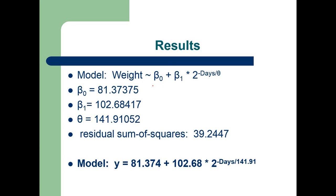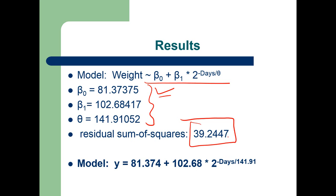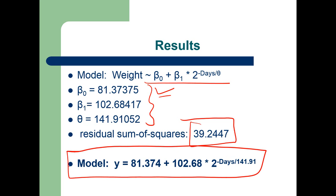Here is the final model from the given data. We have three estimated parameters: beta 0 is 81.37, beta 1 is 102.68, and theta is 141.9. The residual sum of squares estimate is 39.2547. The final model uses these values — intercept 81.37, slope coefficient 102.68, and exponential coefficient 141.9 — and through this equation you can fit the regression curve to the data.